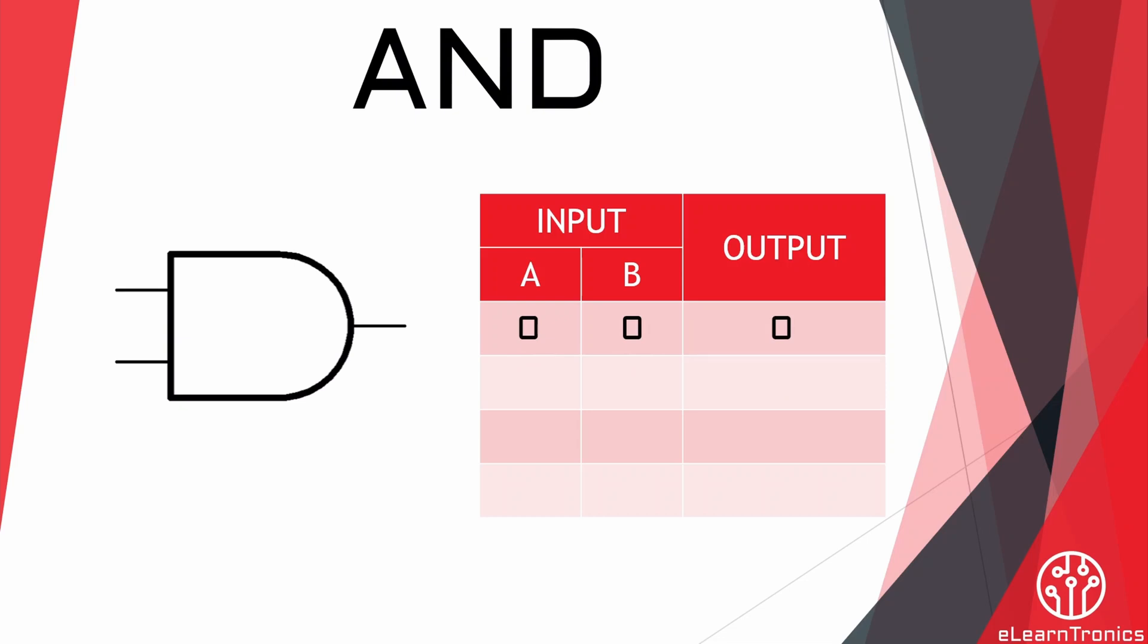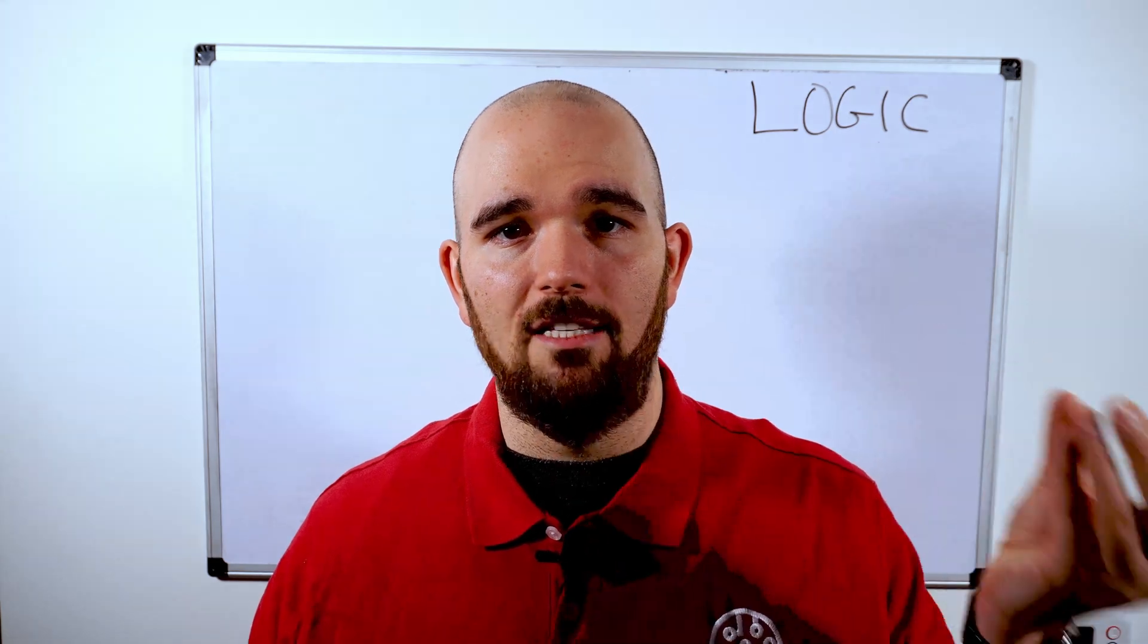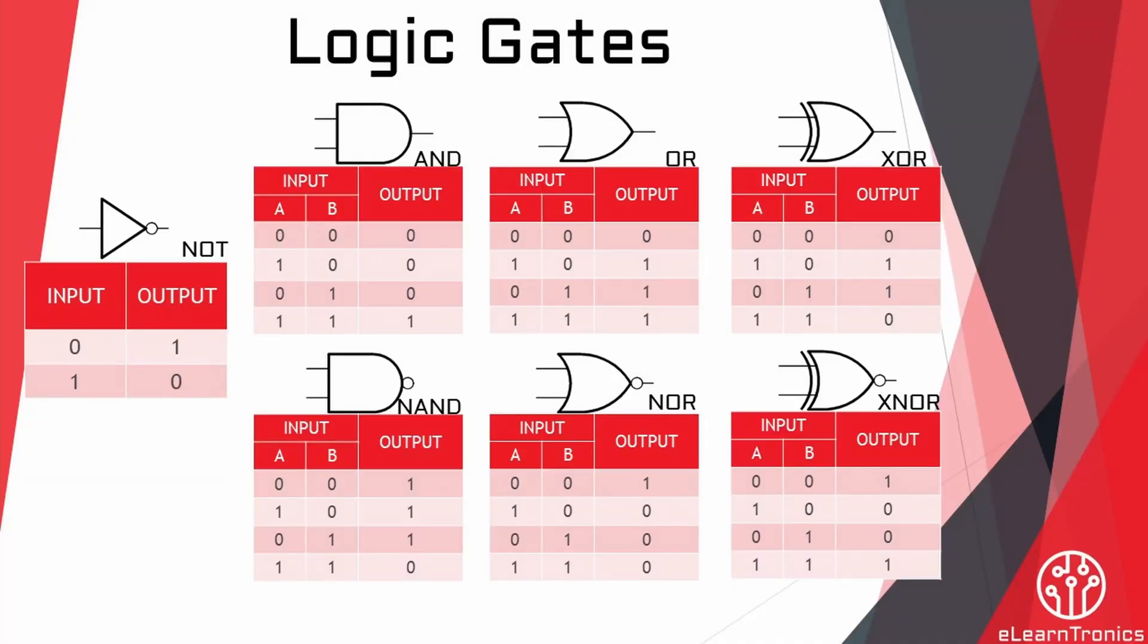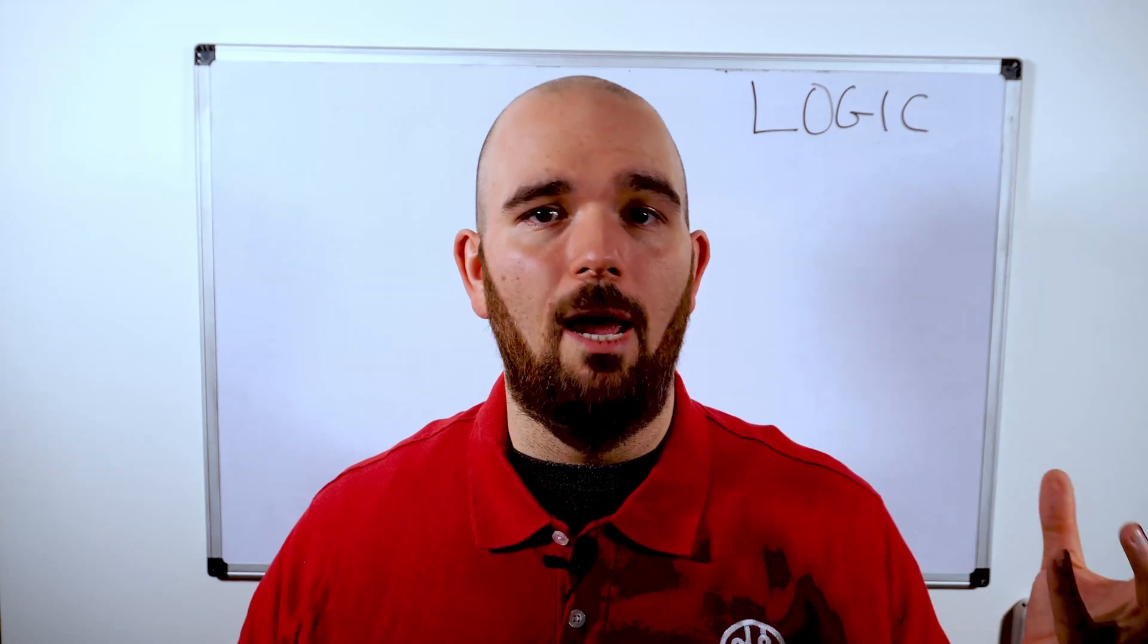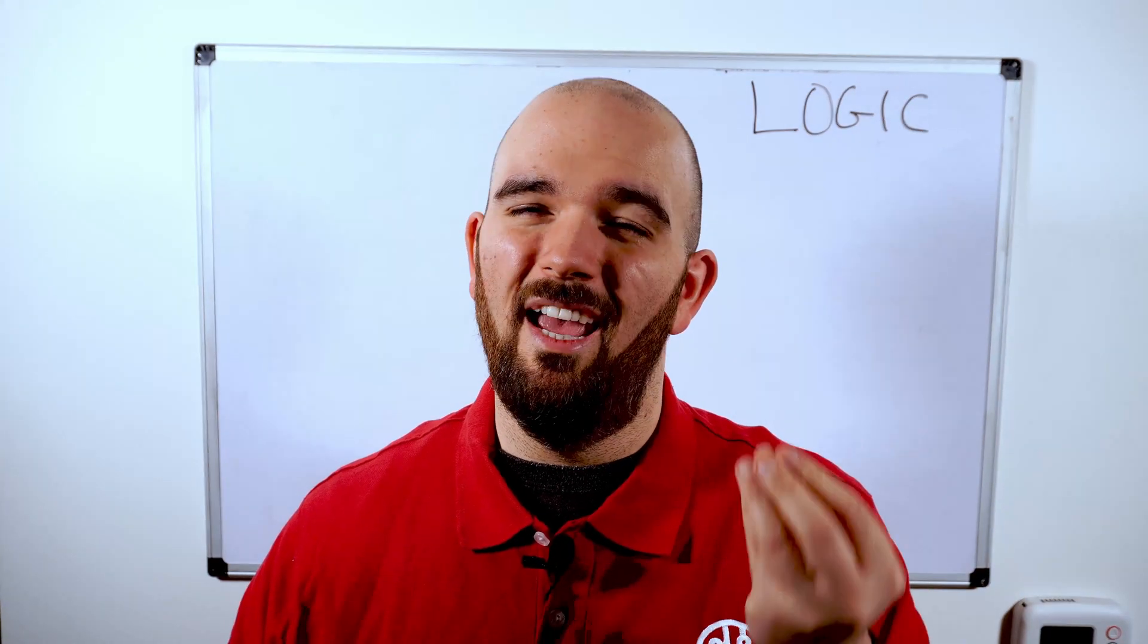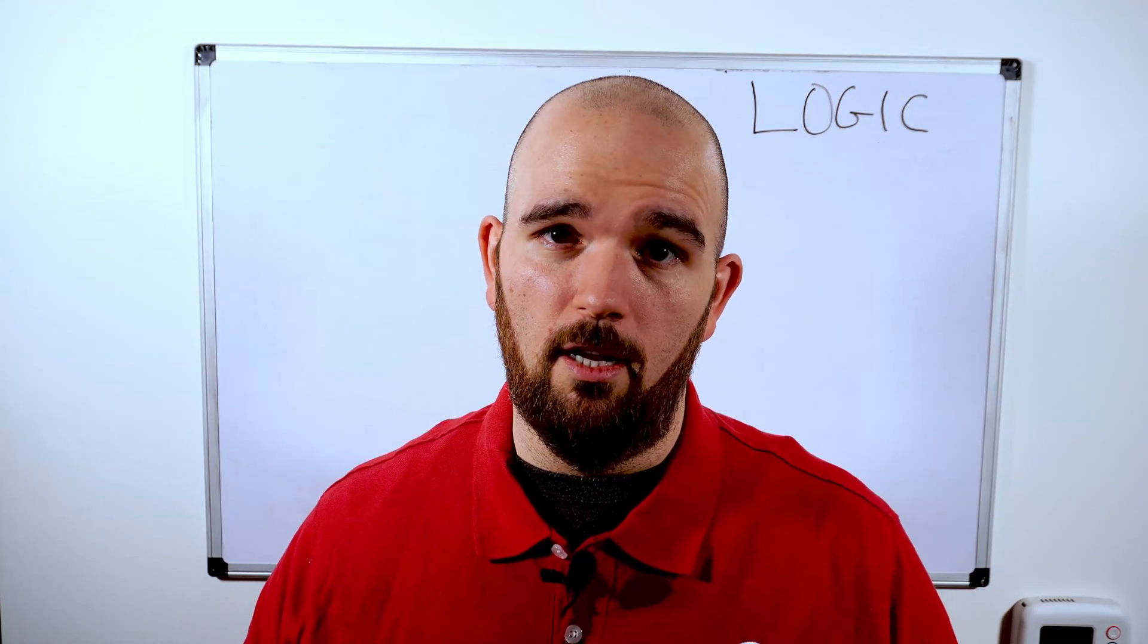Then it will move through to 1, 0. That means switch A is on, switch B is off. Then we go to 0, 1. Switch A is off, switch B is on. And then 1, 1, which means both switches are on simultaneously. Every single logic gate has a corresponding truth table. By using that truth table, we can understand what we expect to occur. And then we can start to use it in circuits.